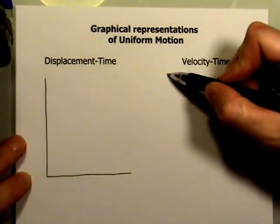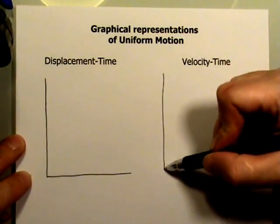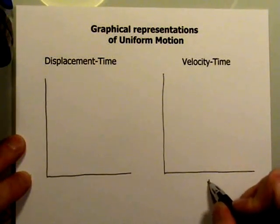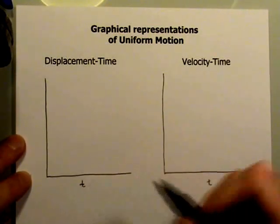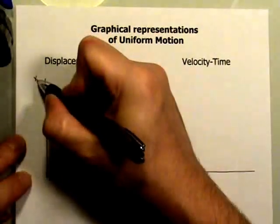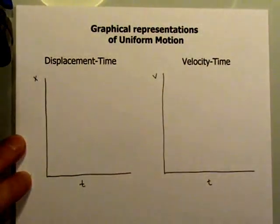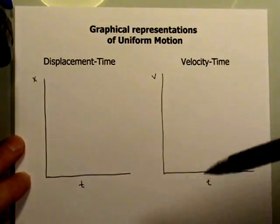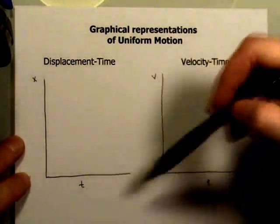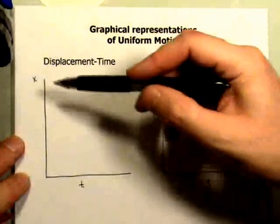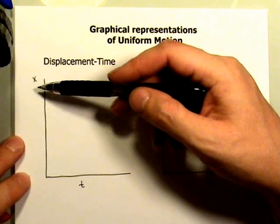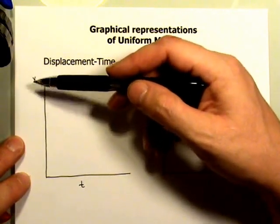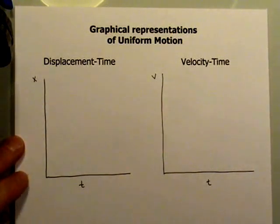We're going to compare that at the same time to a velocity-time graph. We'll put time on the horizontal axis, and on the vertical axis we'll have x for displacement or v for velocity. That could be a little confusing — the x-axis is the horizontal axis in math, but in physics x represents the displacement or position of the object, so we graph x on the y-axis.